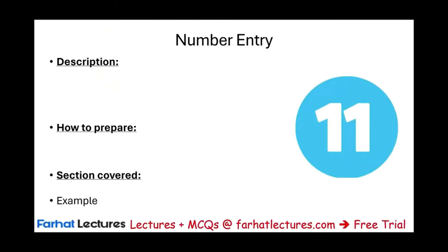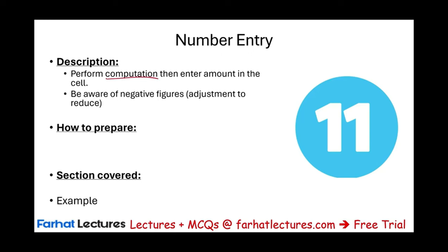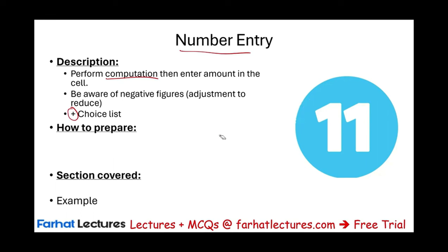Then we have number entry. Here you're going to have to perform a computation and then enter the amount in the cell. Be aware: sometimes they might tell you that if an adjustment reduces an account, make sure it's negative. Sometimes you might have number entries combined with a choice list — so you input a number and there's also a choice list with yes/no, favorable/unfavorable, or similar options.